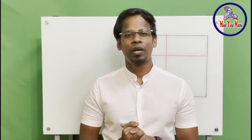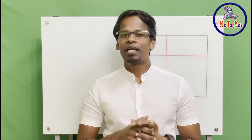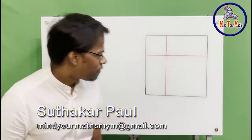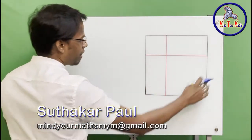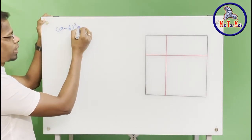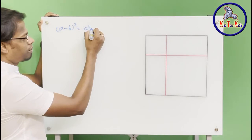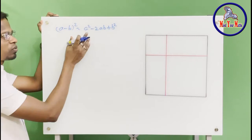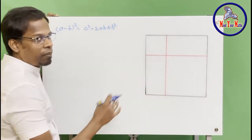In this video we are going to understand (a - b)² = a² - 2ab + b². We know that formula but let's understand how it is made, how that formula is proven using a geometrical diagram. So for that we will use this diagram. Let's write the formula first: (a - b)² = a² - 2ab + b². This is what we are going to prove using this diagram.